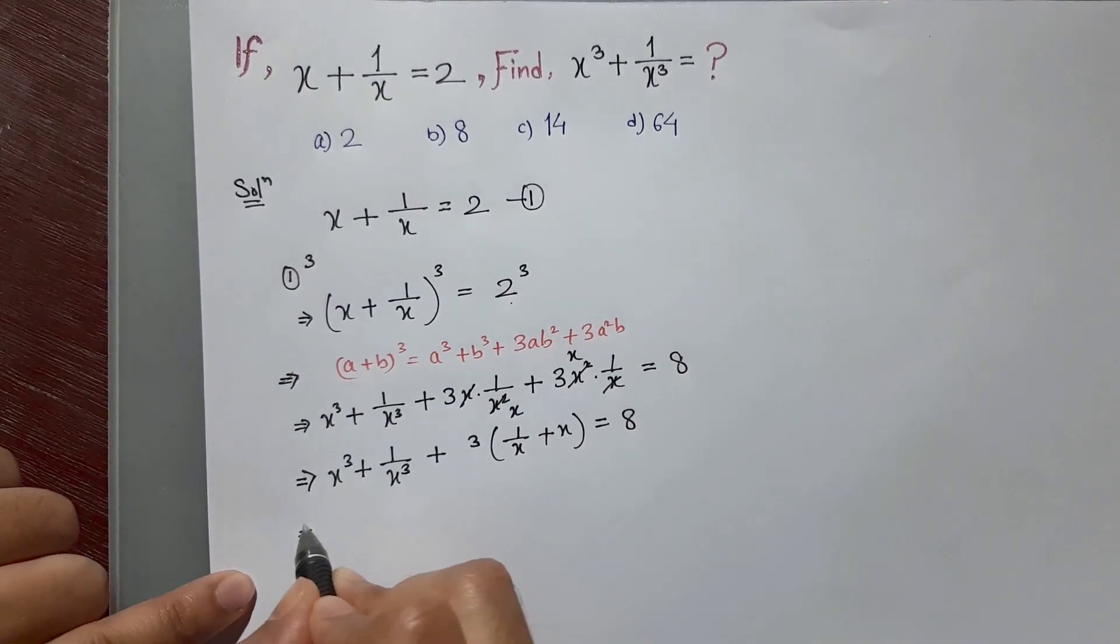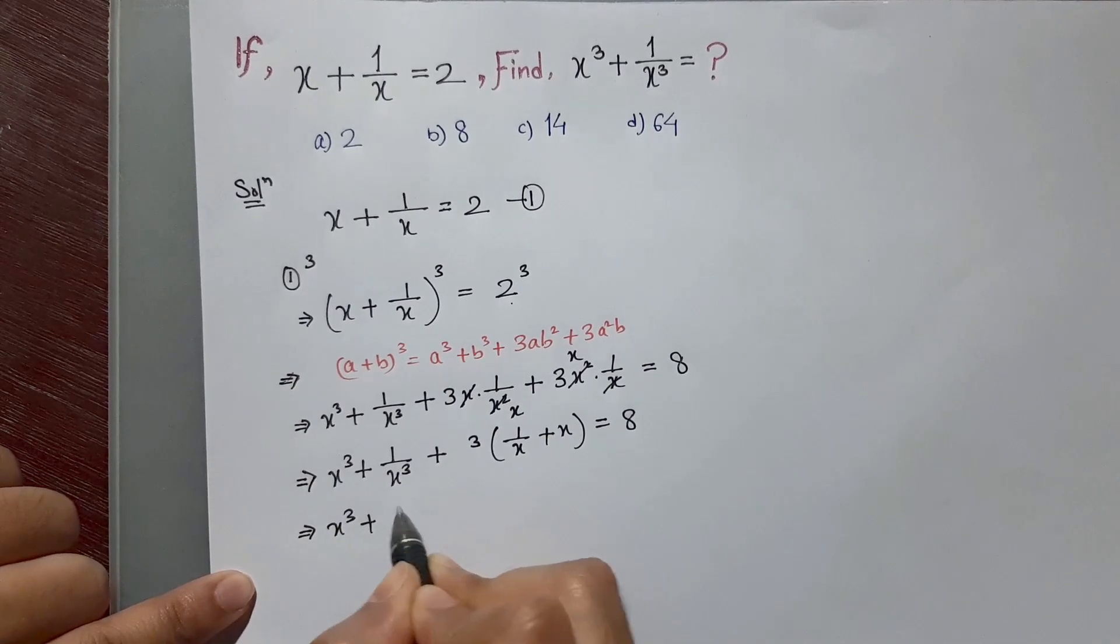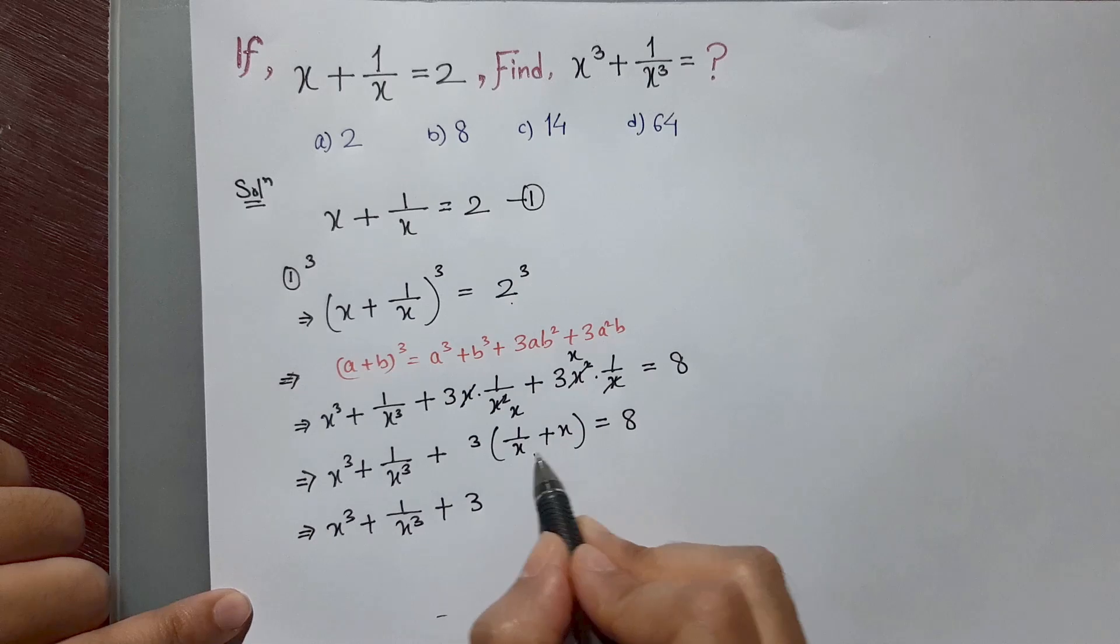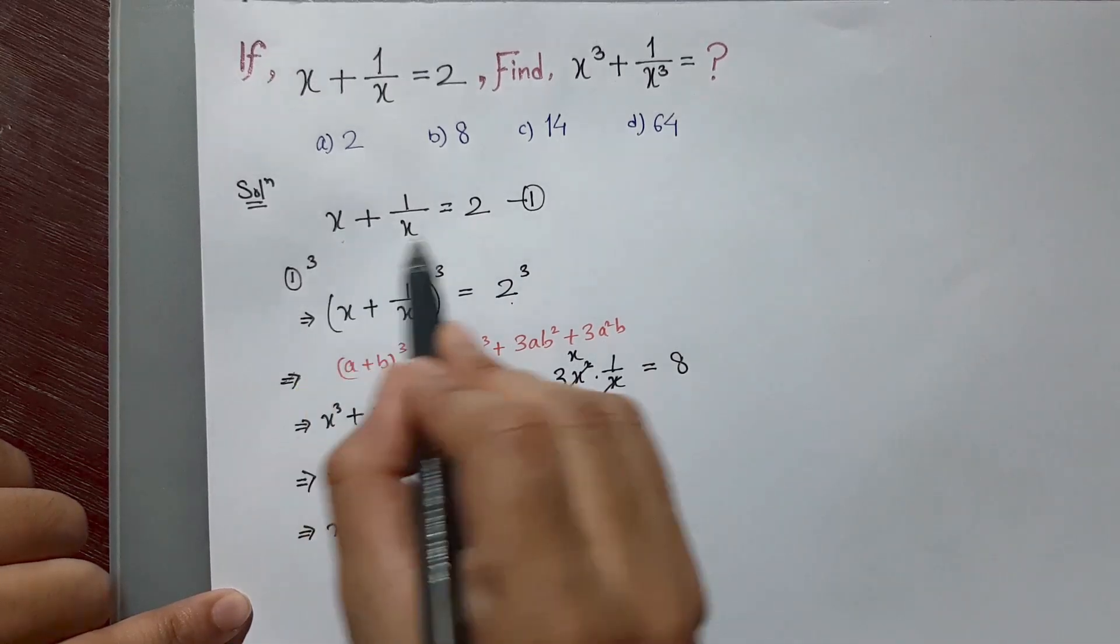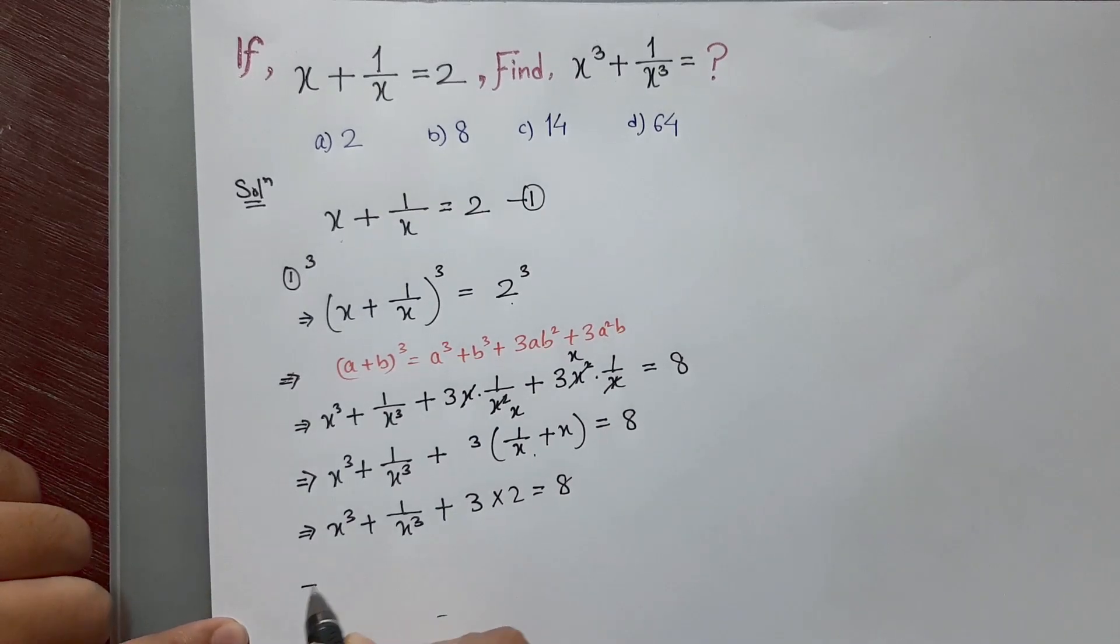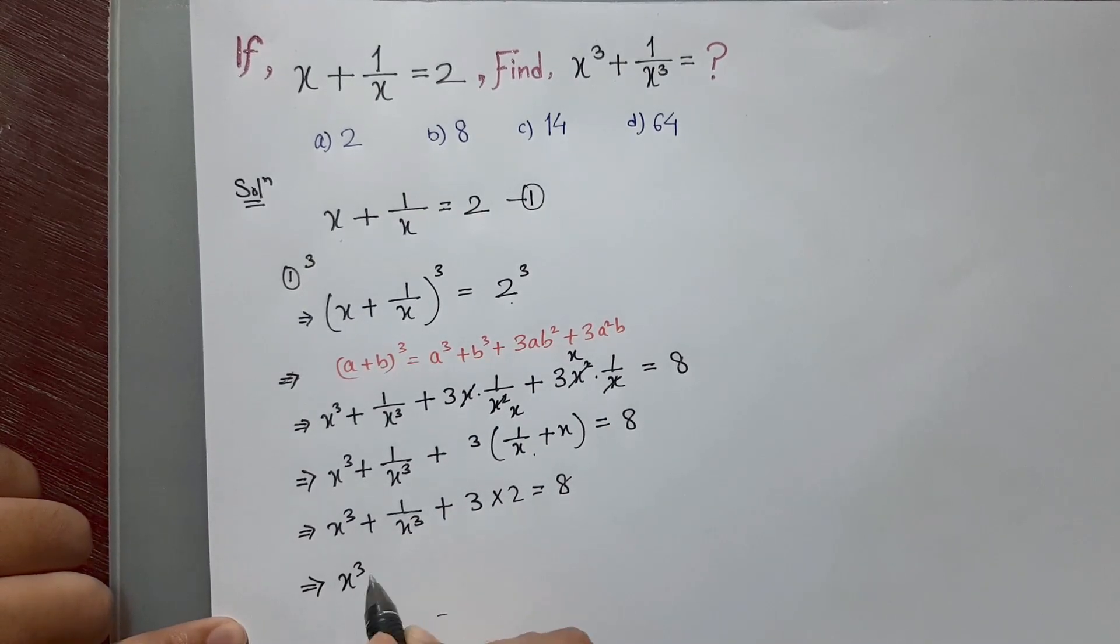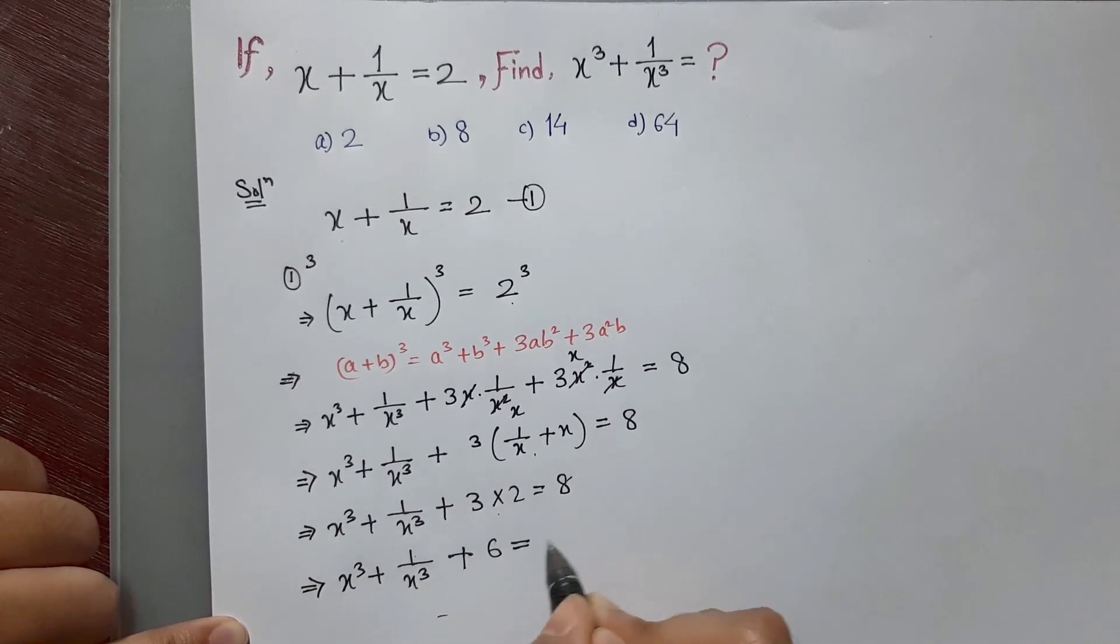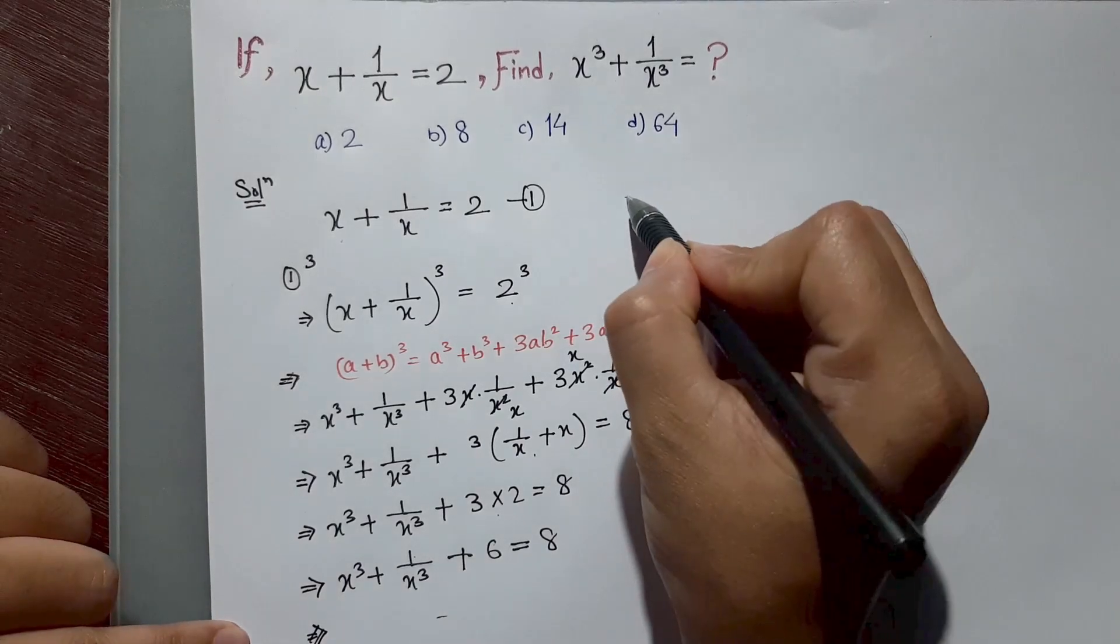x cube plus 1 by x cube plus 3 into x plus 1 by x. We have 2, so we'll place here 2. 3 times 2 is equal to 6. So x cube plus 1 by x cube plus 6 is equal to 8.